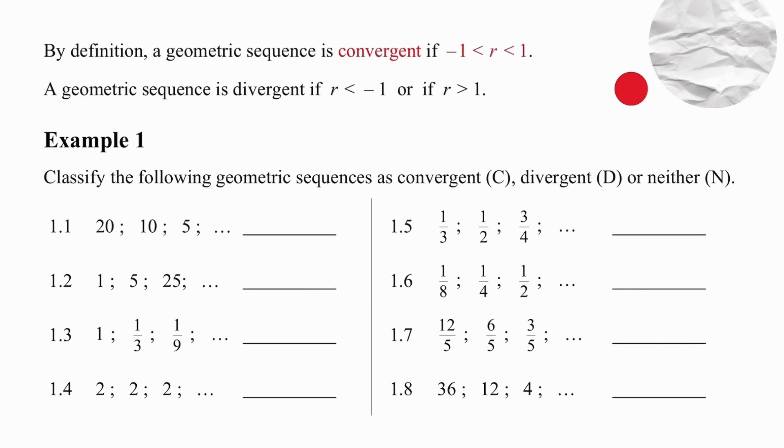But before we can start with that, we need to first have a look at the difference between a convergent geometric sequence and a divergent geometric sequence. So everything depends on the ratio. If you have a ratio which lies between minus one and one, then your sequence is defined as convergent. By definition, R cannot equal zero, so you will not have a geometric sequence if you have a ratio of zero.